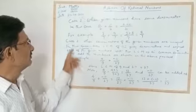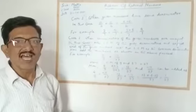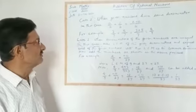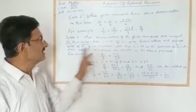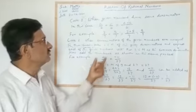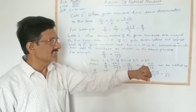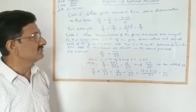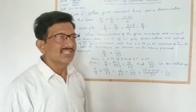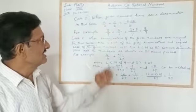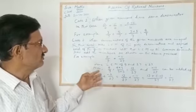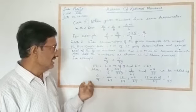Now in the second case, when the denominators are not the same. When denominators of the given numbers are unequal, in that case we should take the LCM of the given denominators and express each of the given numbers with the LCM as the common denominator. When we get the common denominator, we then add both rational numbers just as shown in the first example.